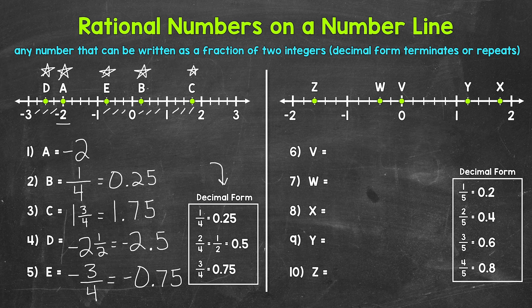Let's move on to numbers six through ten, where we'll work with a different number line. Starting at zero and going right, we have fifths: one fifth, two fifths, three fifths, four fifths, one, and so on. Moving to the left: negative one fifth, negative two fifths, negative three fifths, negative four fifths, negative one, and so on.